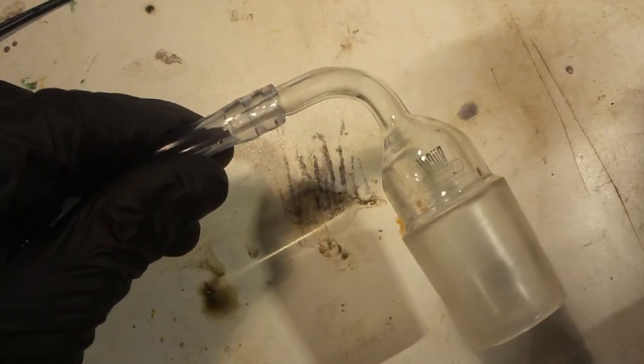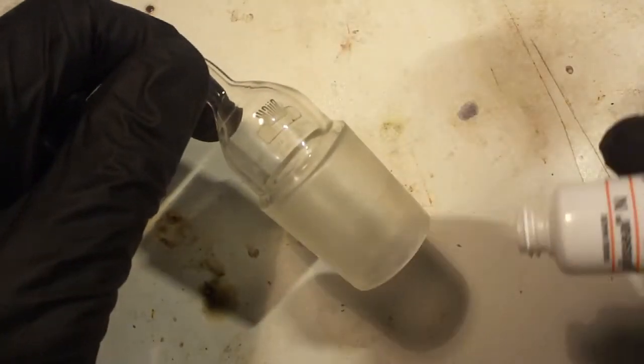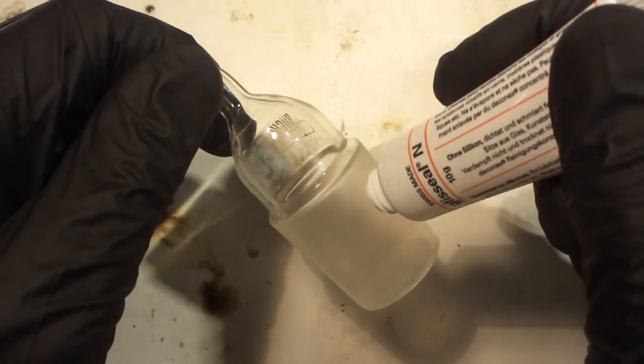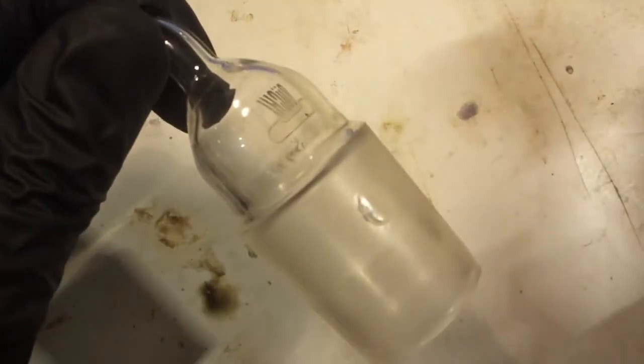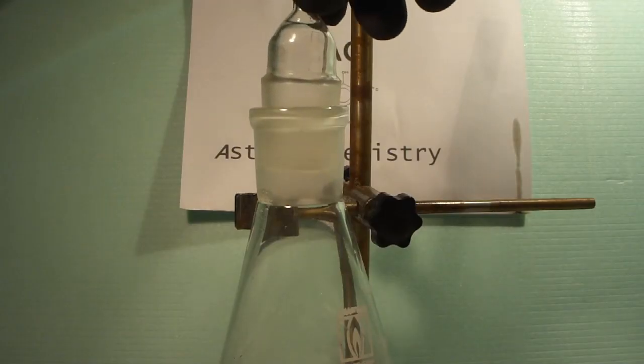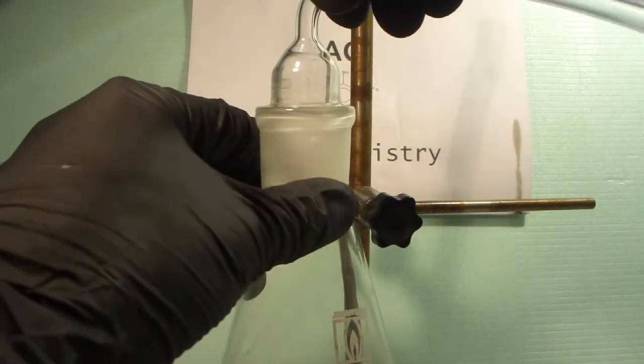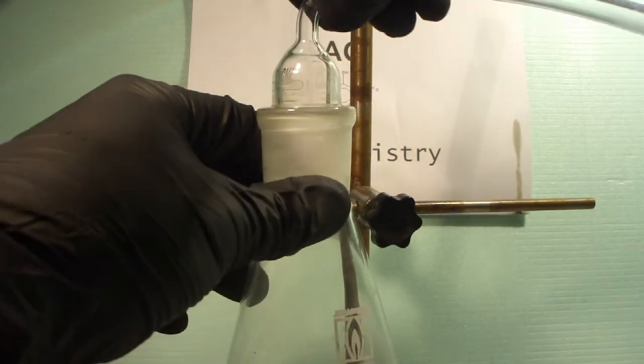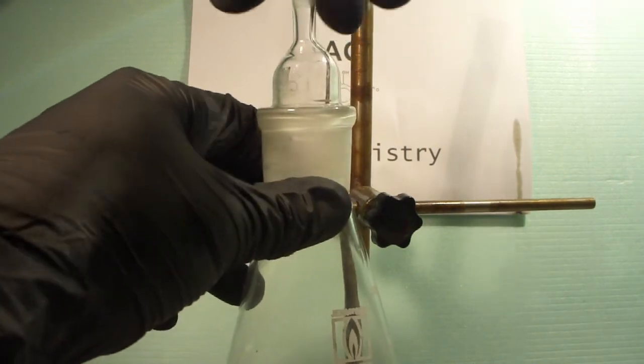Then, grease the gas takeoff adapter with a small amount of lamp grease. Equip this adapter with a flexible tube which is connected to a glass tube on the other side. Secure the adapter with a Keck clip.